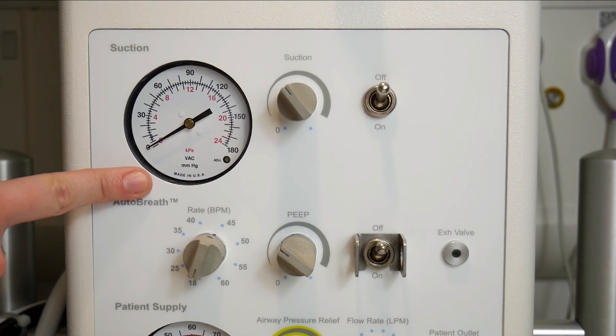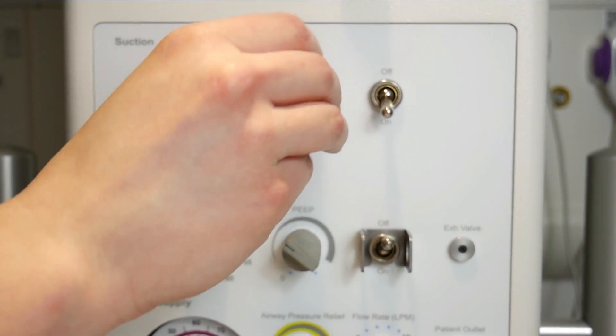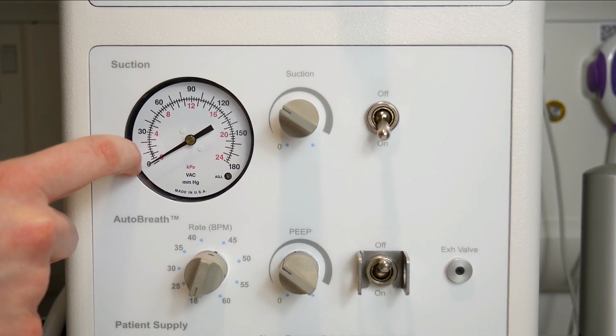This row corresponds to the suction. You turn it on using this switch and then increase the pressure by turning this dial. When you occlude the suction device, this needle will move to show how much negative pressure is exerted.